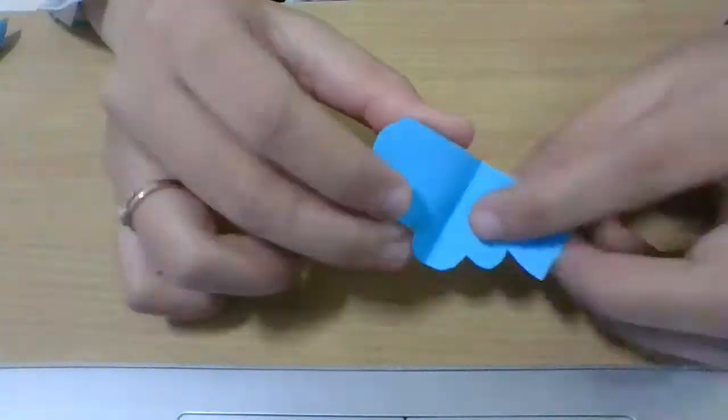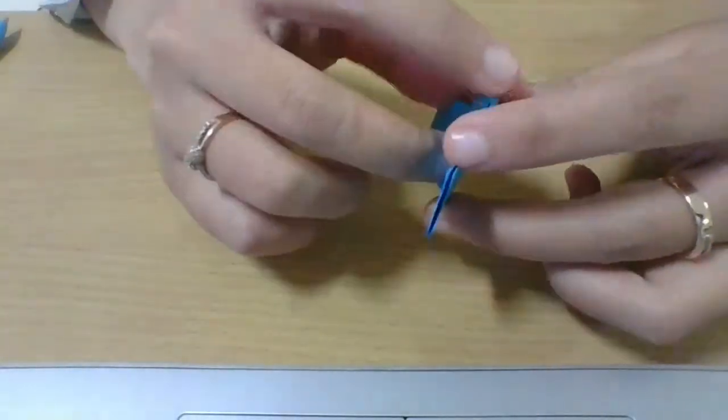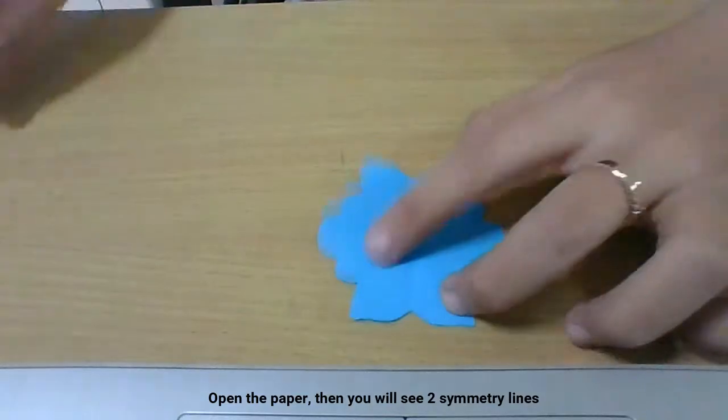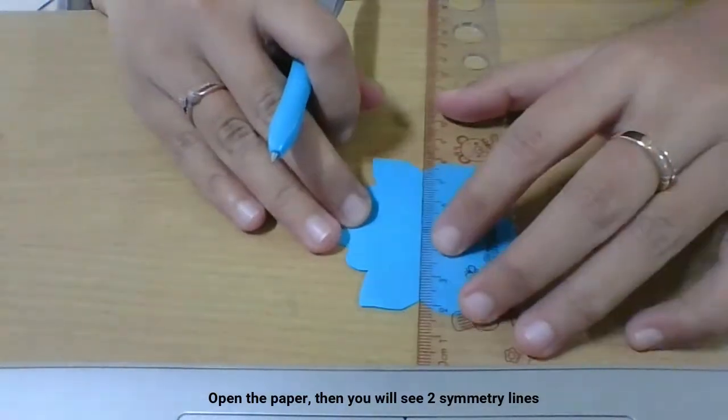After we cut, then we can open the paper, then we will see there are two symmetry lines. Then you can draw the symmetry lines.